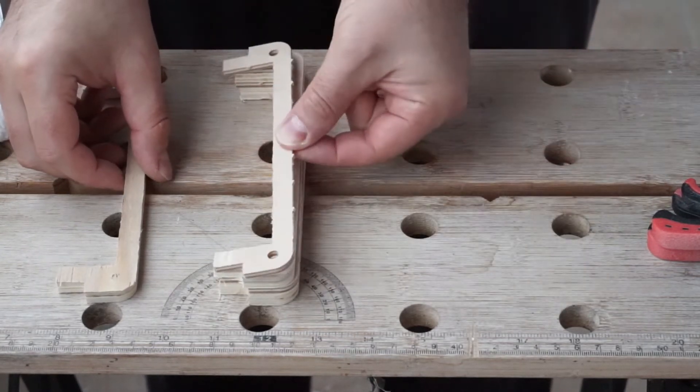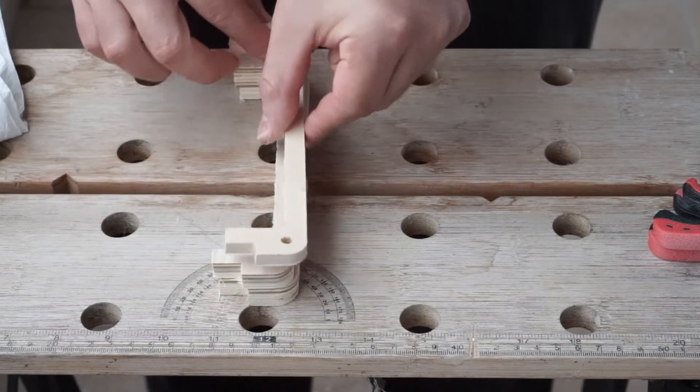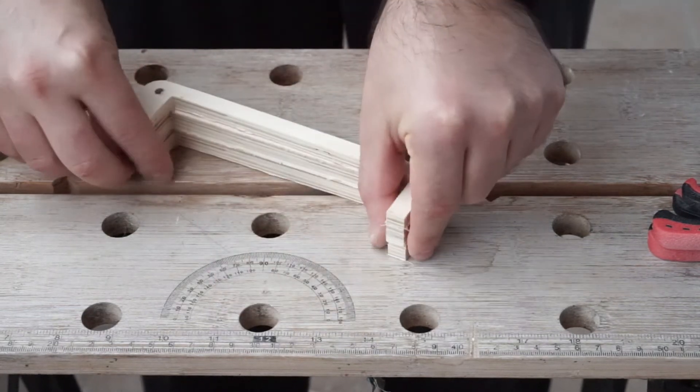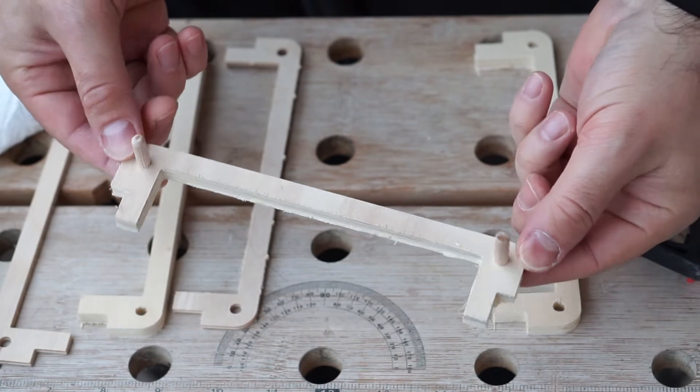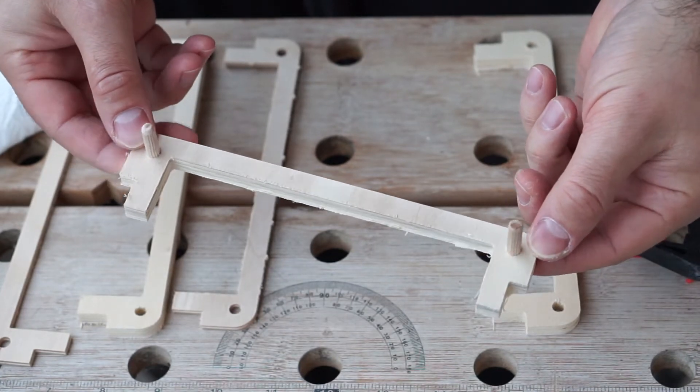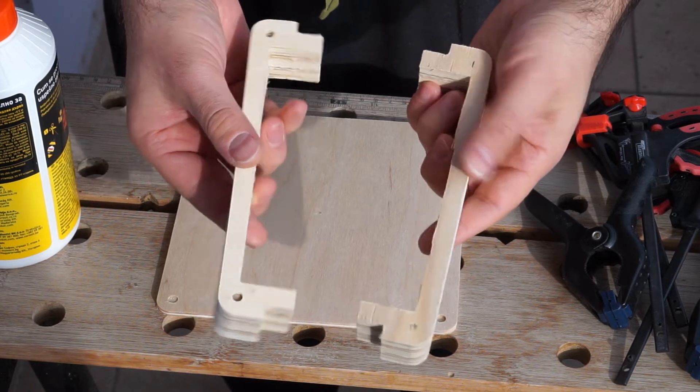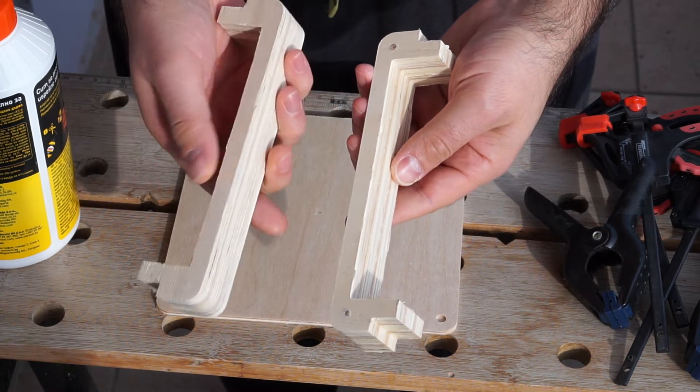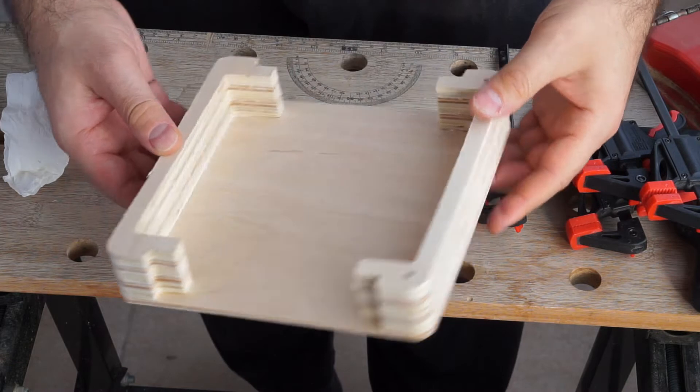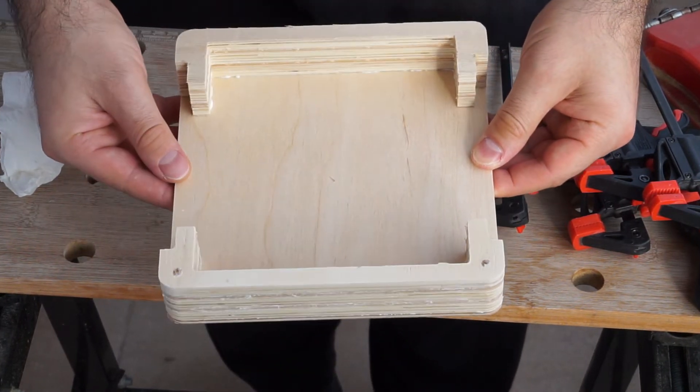Two of the sides are made of layers of plywood stacked on top of each other and glued together. I cut 6mm holes and put dowels inside them to help with the alignment. These two pieces I glued to a flat rectangular piece of plywood.